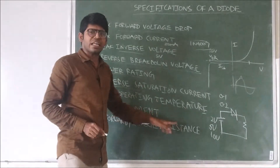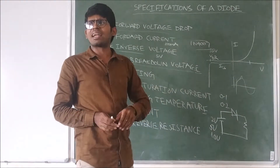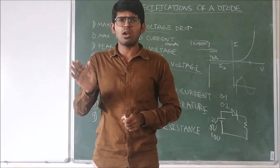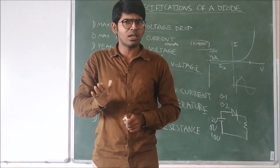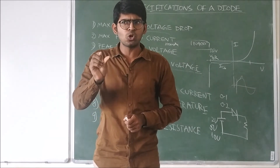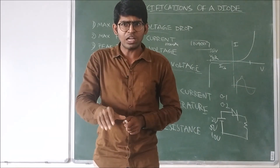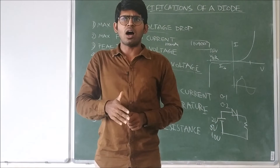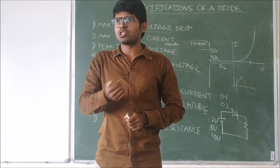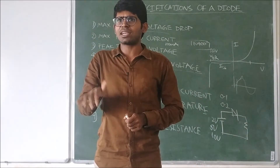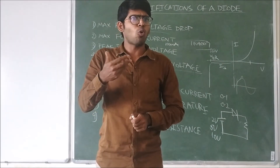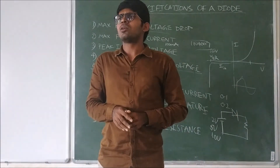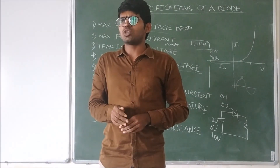Forward and reverse resistance — forward resistance is always in the terms of few ohms, while reverse resistance is in mega ohms. Always in reverse bias the diode is acting like an open switch. In forward bias it is acting like a closed switch.